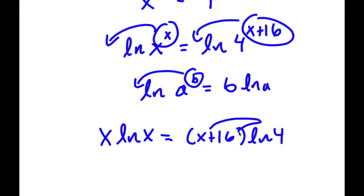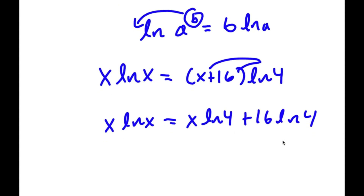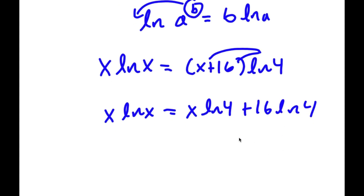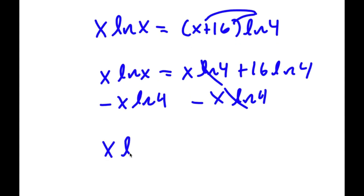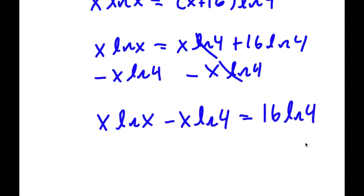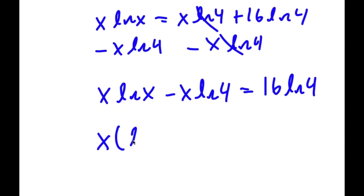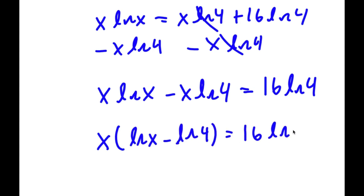Now if I distribute the ln 4, I get x times ln 4 plus 16 times ln 4. If I subtract x times ln 4 on both sides, these two cancel out and I get x times ln x minus x times ln 4 is equal to 16 times ln 4. Now I can factor out x, so I get x times ln x minus ln 4 is equal to 16 times ln 4.